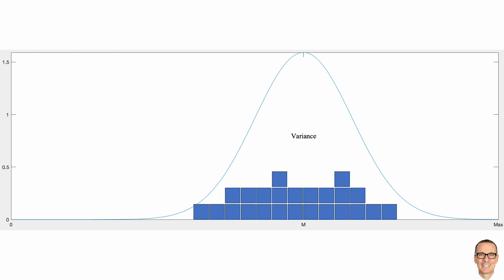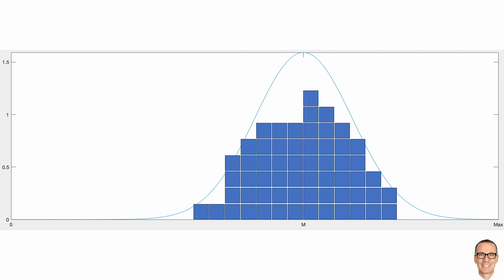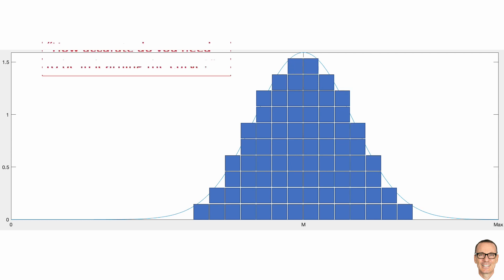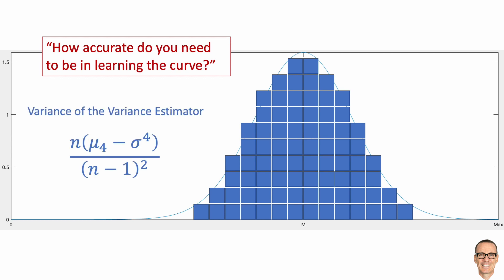And if you assess lots of people, then you'll learn the full curve. The more people you assess, the more accurate the curve will be estimated. However, in practice, you really don't want to spend too much time in the curve learning phase. At some point, you actually do want to decide on your selection threshold and put it to use. So how accurate do you need to be in learning the curve?